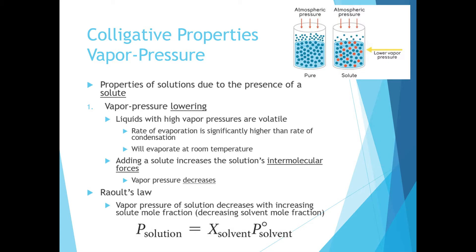This equation will be given to you on exams. We can calculate the vapor pressure of a solution by taking the mole fraction of the solvent and multiplying by the vapor pressure of the pure solvent.